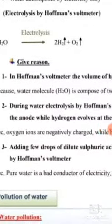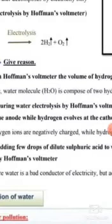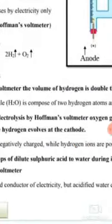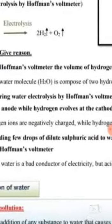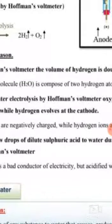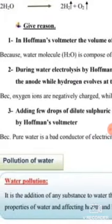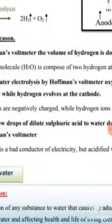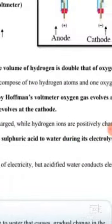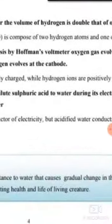During water electrolysis by Hoffman voltmeter, oxygen gas evolves at the anode while hydrogen evolves at the cathode because hydrogen ions are positively charged while oxygen ions are negatively charged.